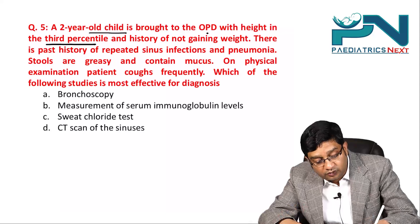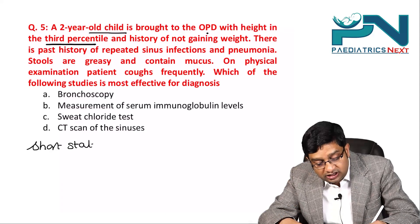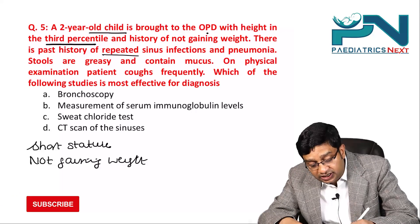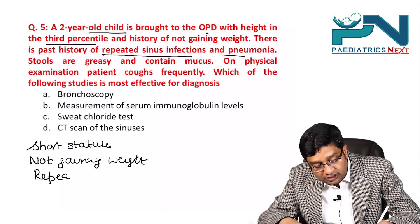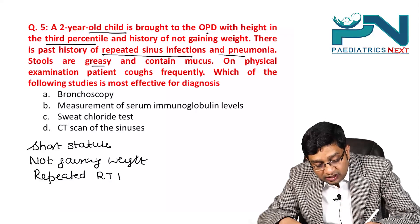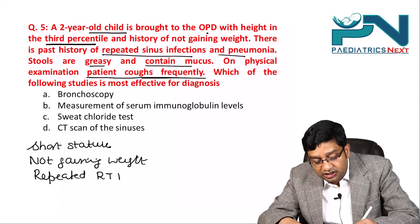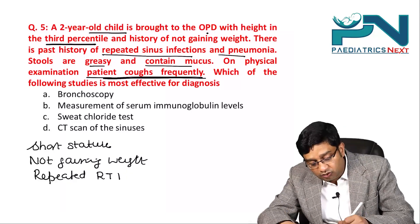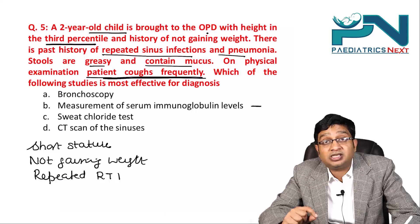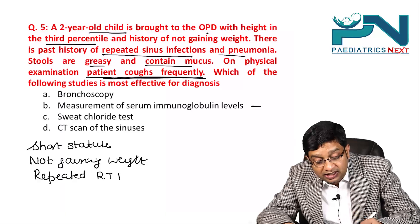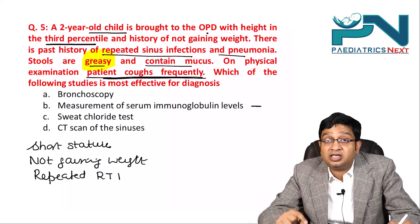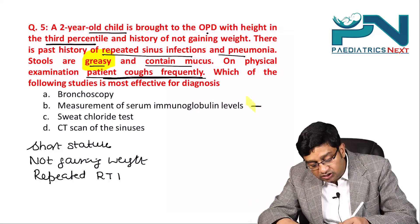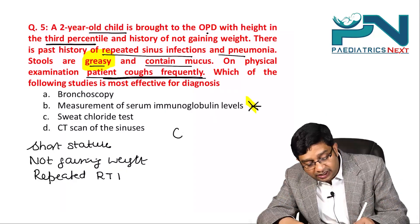Question 5: A 2-year-old child presents with height in the third percentile, failure to gain weight, repeated sinus infections and pneumonia, and greasy stools containing mucus. Greasy stools indicate fat malabsorption. Serum immunoglobulin levels might suggest IgA deficiency, but IgA deficiency cannot explain greasy stools. Recurrent respiratory infections combined with fat malabsorption point to cystic fibrosis.